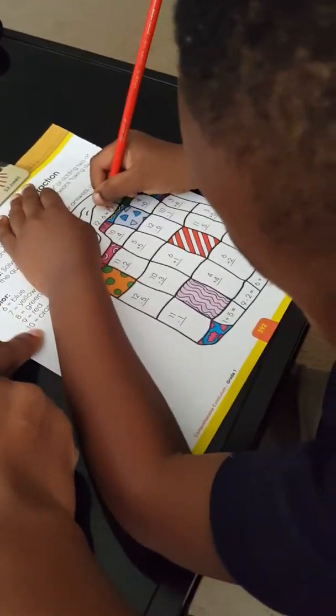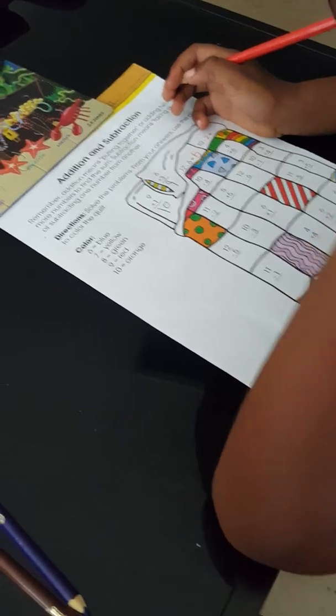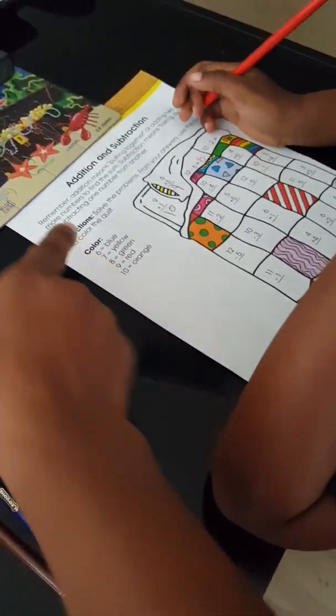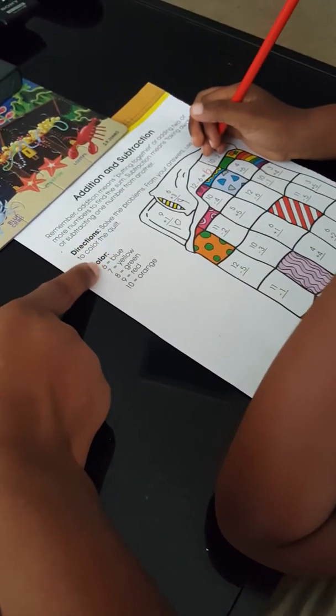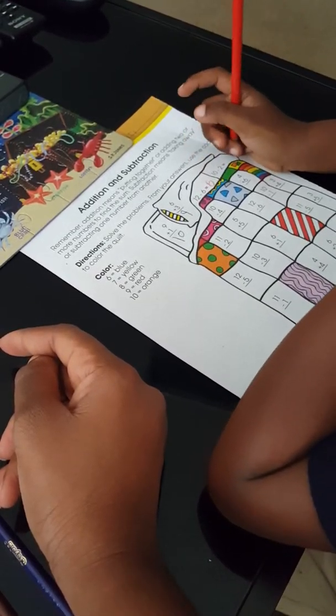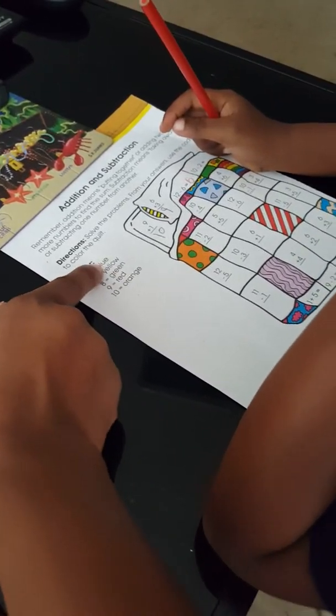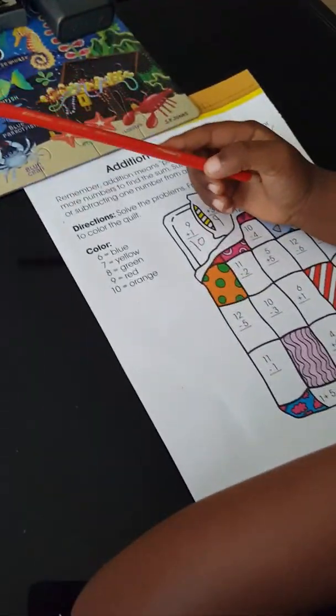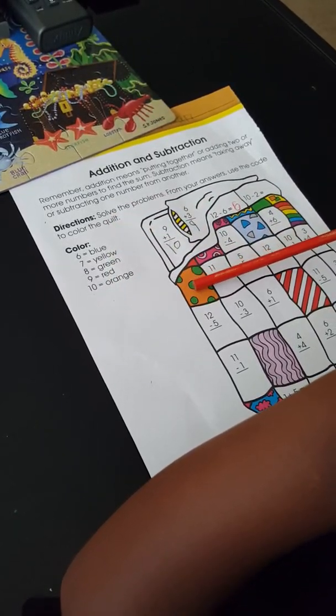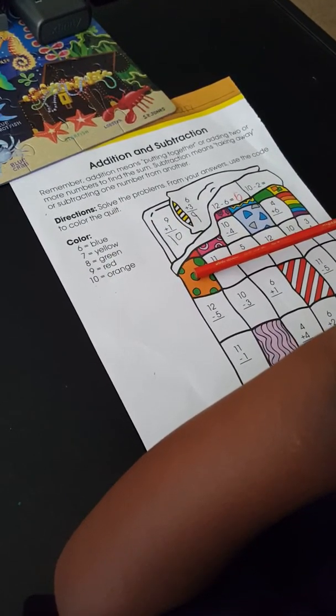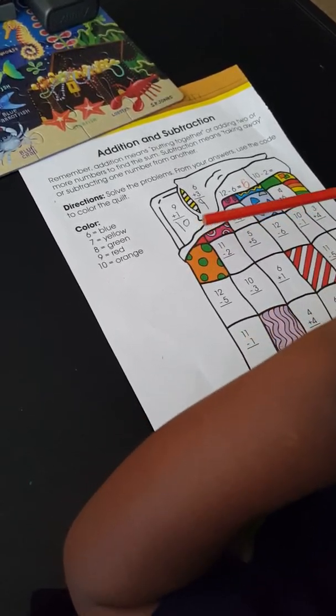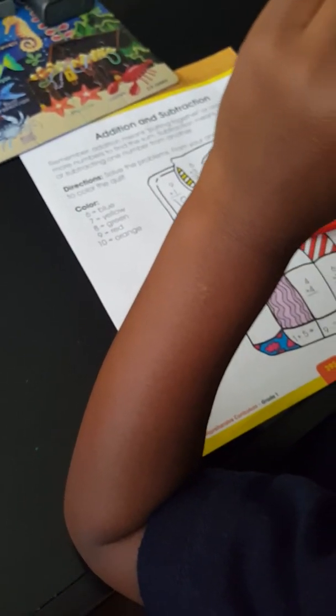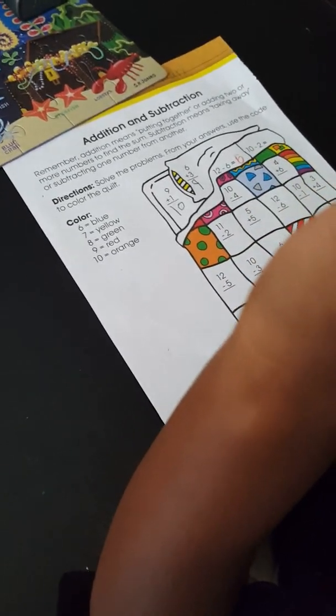All right. So you know what these colors mean? What are we doing here once we're done? So the numbers that are six, what color are we going to color it? Blue. What else do we have? Seven. What color? Blue. Okay. What about eight? Green. Good. Nine? Red. Very good. Okay. And ten will be in orange.